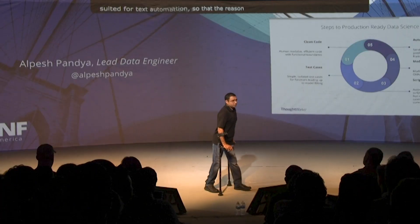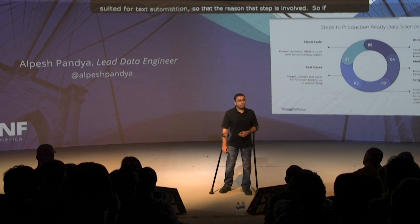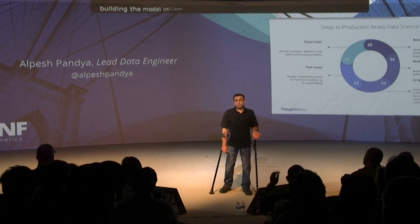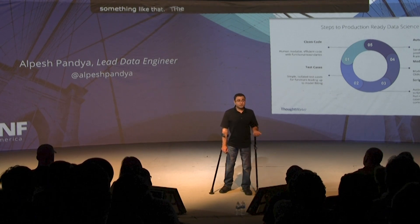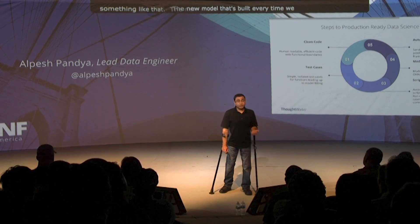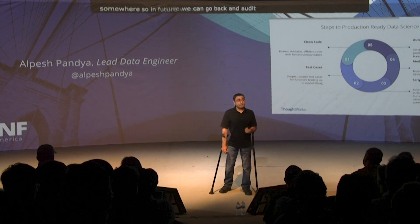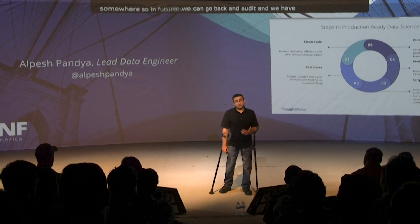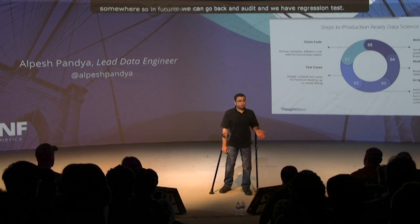The next step is model persistence. If we are building the model in runtime - using lambda architecture or rebuilding the model nightly from fresh data - the new model built each time needs to be stored somewhere so we can audit what model was built and deployed. This also enables regression testing, A/B testing, and champion-challenger testing. Every version of the model should be persisted.